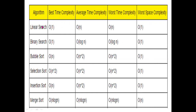Next, linear search: the best time complexity is O(1). The average time complexity and worst time complexity are O(n).